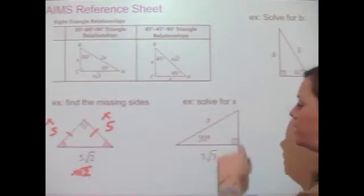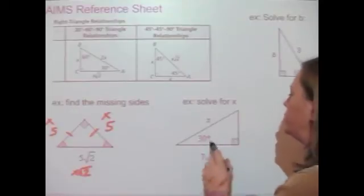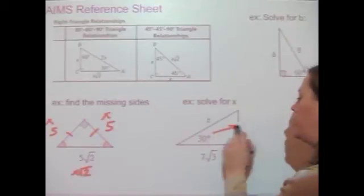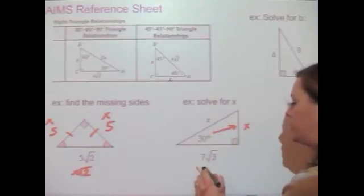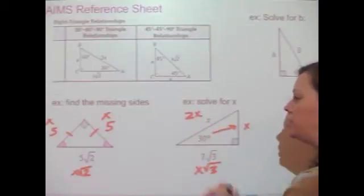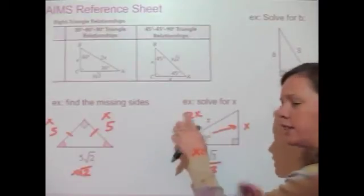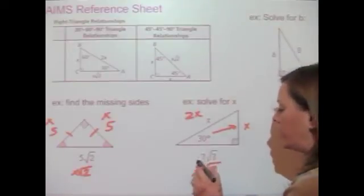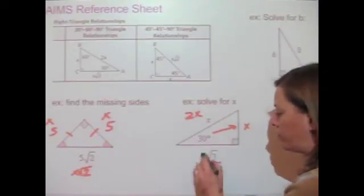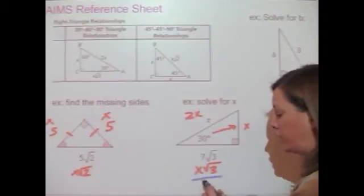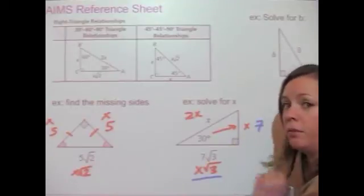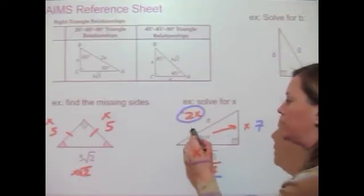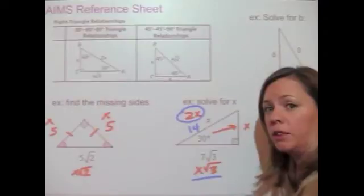Next example: we have a side labeled x, another side of 7√3, and a 30-degree angle. The 30-degree angle is across from the short side (x), the side of 7√3 is across from the 60 (usually x√3), and the hypotenuse would be 2x. If 7√3 equals x√3, then x equals 7. The hypotenuse must be twice that, so it equals 14.